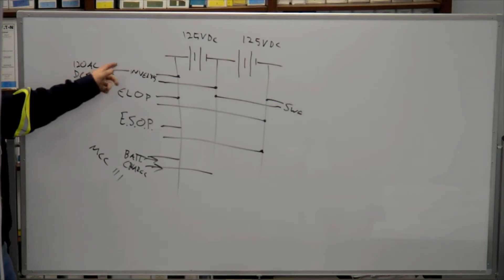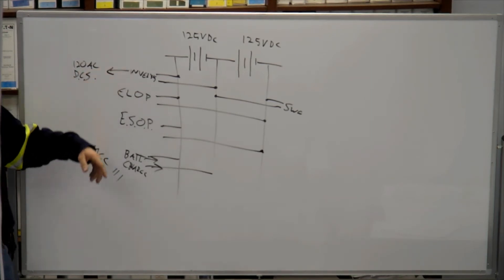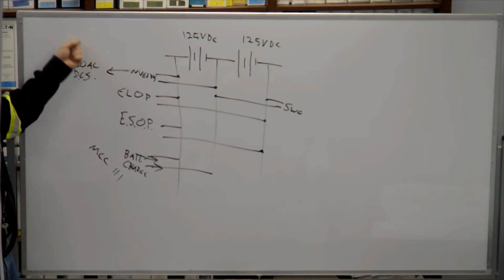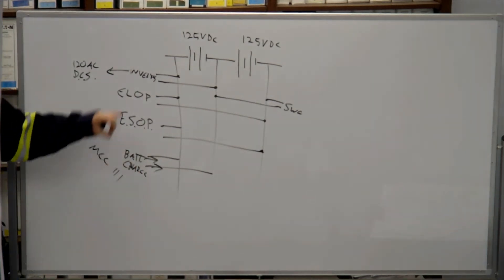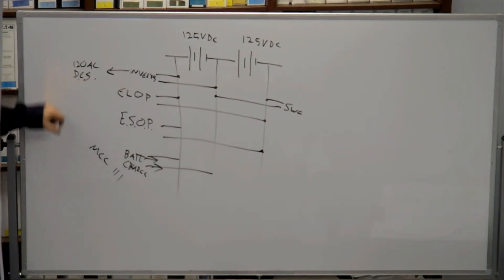And there's also a bypass for the inverters. So the inverters have 480 going to them so that you have a switch that you can just say no battery, but we still want to run all the 120 volt AC loads.